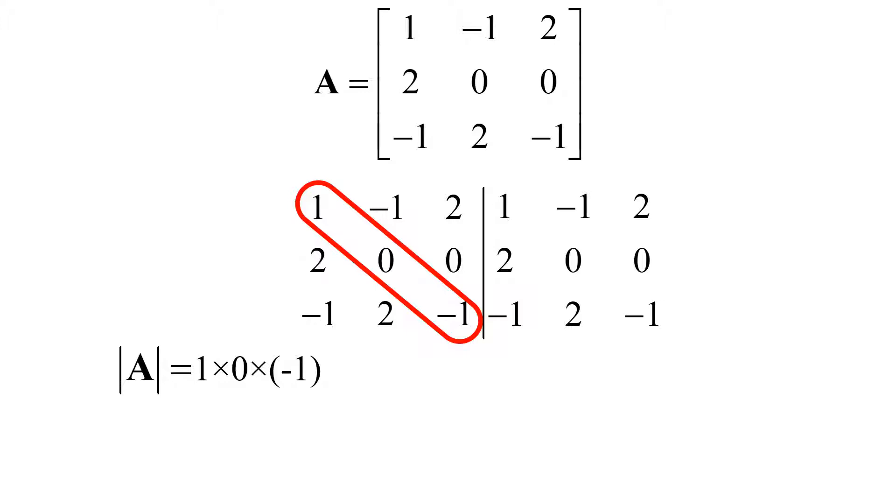Next step is to collect three elements in the backward slash direction from the first column, and then multiply them together. We have 1, 0, and minus 1, and we can multiply 1 by 0 by minus 1 as the first group.